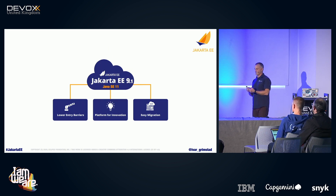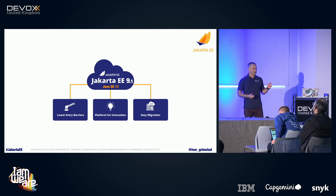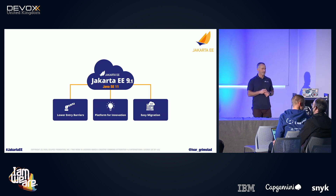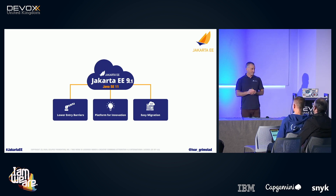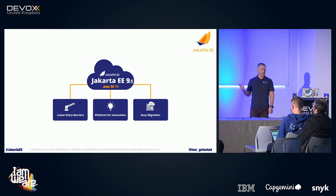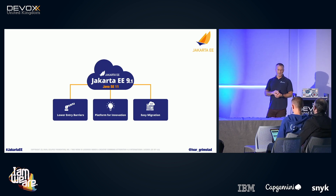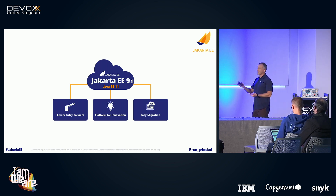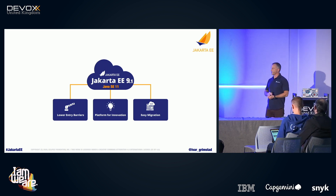Before I start talking about Jakarta EE 10 and core profile, I'll recap a little bit about what's going on with Jakarta EE 9. Jakarta EE 9 came out last year, and a little bit after we produced a 9.1 release, which is something new — we've never done a dot release in Java EE or Jakarta EE before. The reason we did that was to add Java SE support for Java SE 11, meaning vendors can certify their products on Java SE 11.